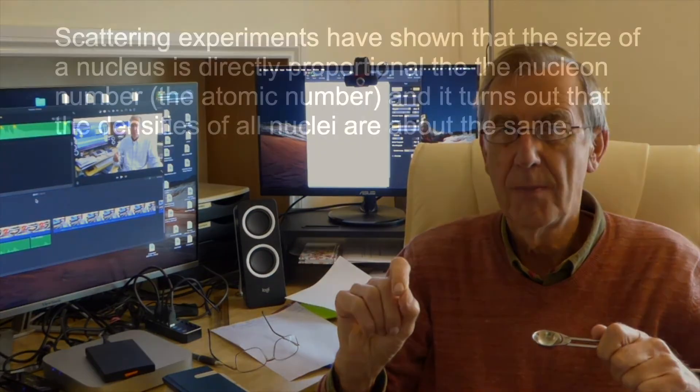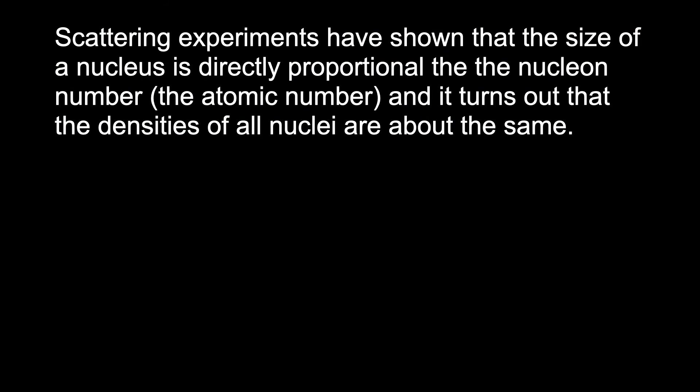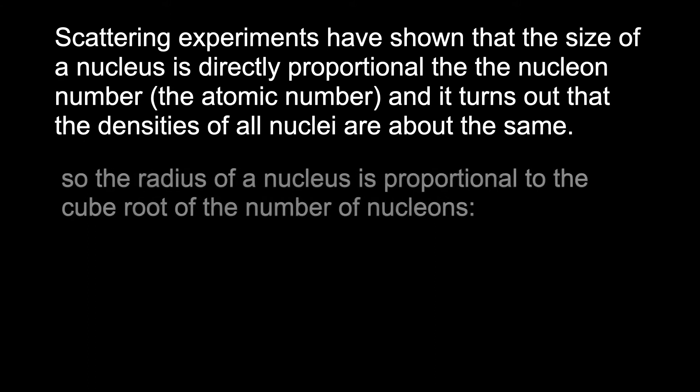That's the general explanation. What follows is the calculation of the density of the nucleus of an atom, which we estimate to be similar to the density of the material in a neutron star. Measurements made from scattering experiments show that the size of a nucleus is directly proportional to its atomic number, the number of nucleons in the nucleus.